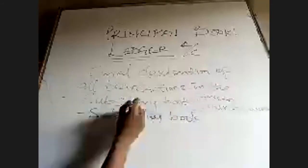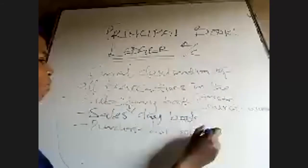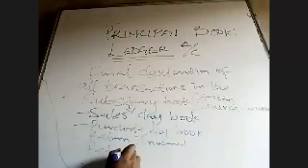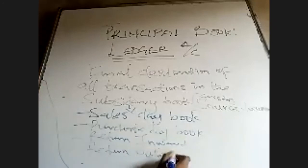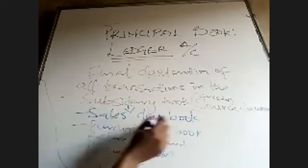Let me quickly do a recap. Your subsidiary books include: sales day book, purchases day book, return inwards day book, return outwards, and the cash book. Those are what we have for the subsidiary books. I see this as repeating what happened in the last class, but we should still do it to give us a recap.